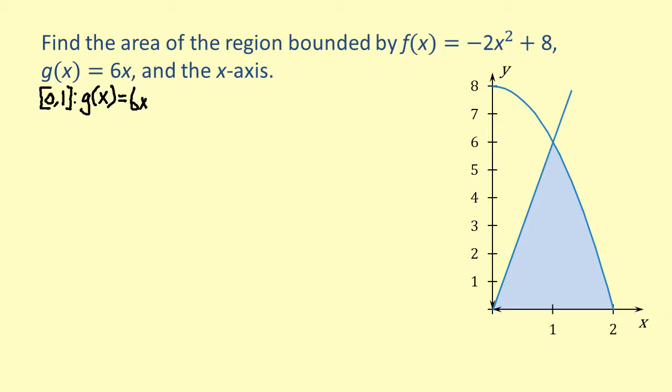Then, on the interval from 1 to 2, the graph of f of x equals negative 2x squared plus 8 serves as the upper bound.